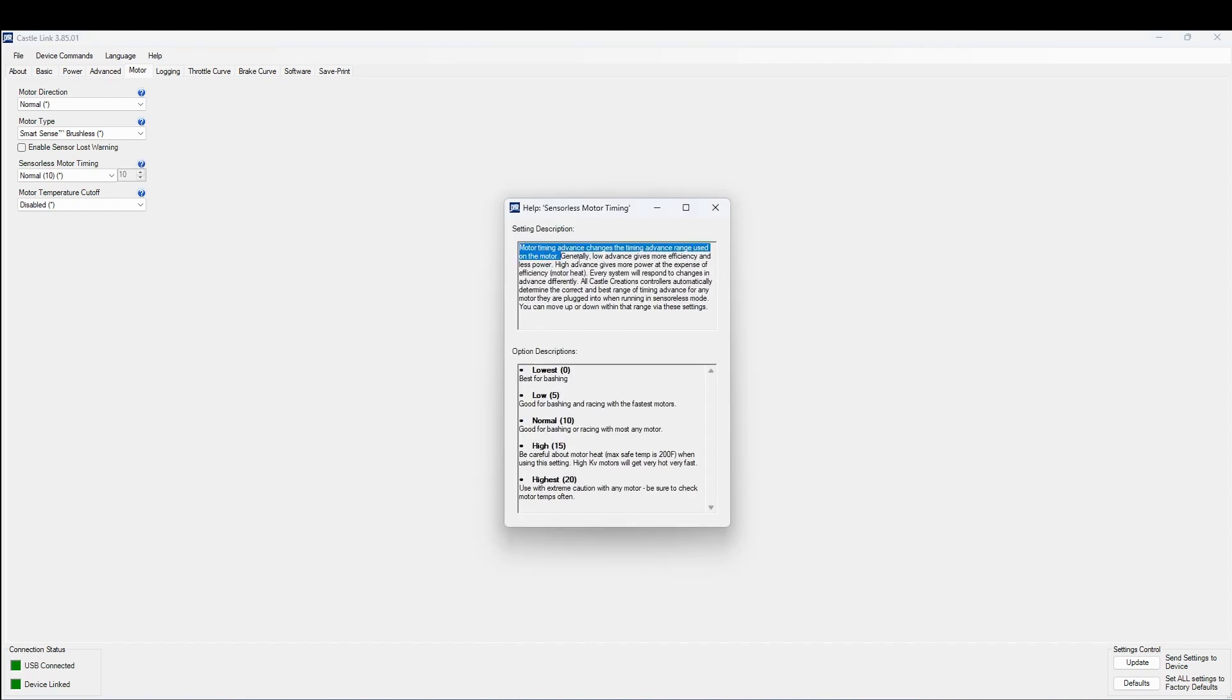This is all we need to be interested in for now. Motor timing advance changes the timing advance range used on the motor. The important part is what I'm going to highlight here and that is timing advance range. This is a range that you are essentially selecting so that the electronic speed control can work within that range and apply the timings that are necessary for the different RPM and loading of the motor and the setup. If we are crazy enough and select the highest amount of timing here that the ESC can provide, what it's going to do is use the highest range of timing and it's going to apply the different timings associated with that range to our motor from the electronic speed control.